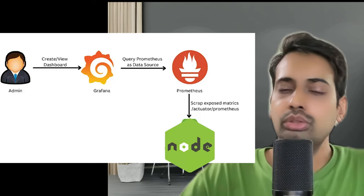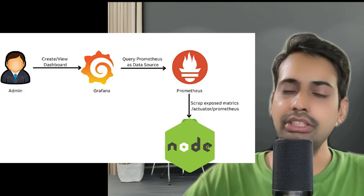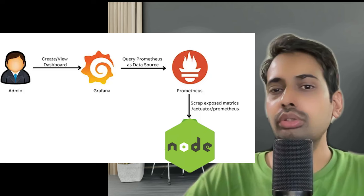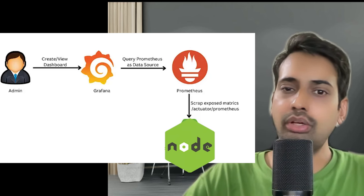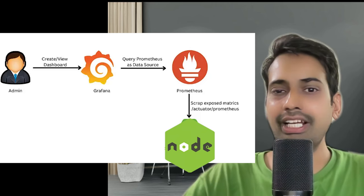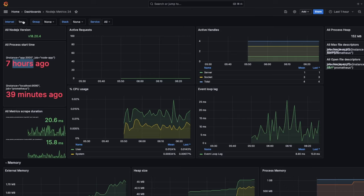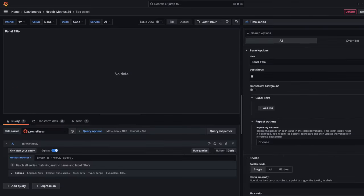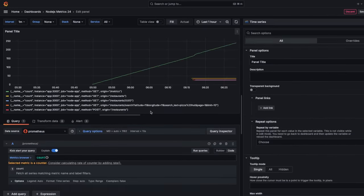So what do we have? We have a NestJS service and we are going to push the analytics from the service to Prometheus. Prometheus will aggregate the data, and Grafana will help us visualize the data in different dashboard charts.